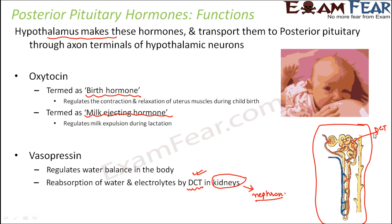A lot of water reabsorption takes place in the distal convoluted tubule due to the presence of this hormone vasopressin, which is also known as ADH — anti-diuretic hormone.